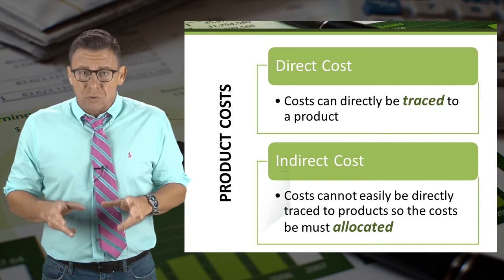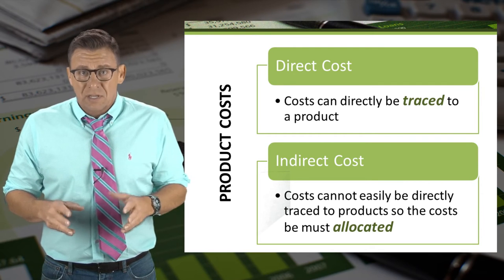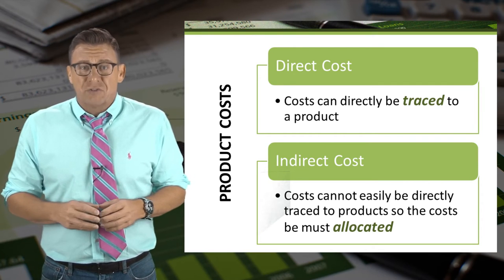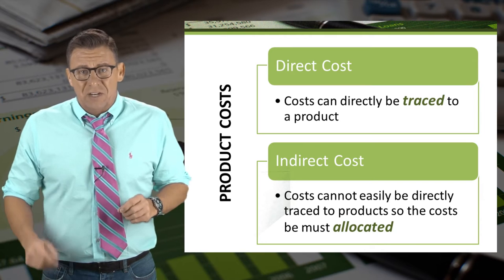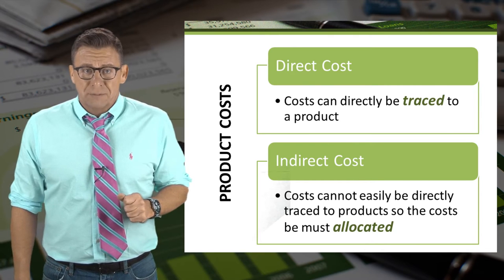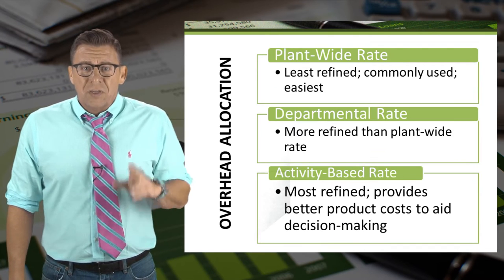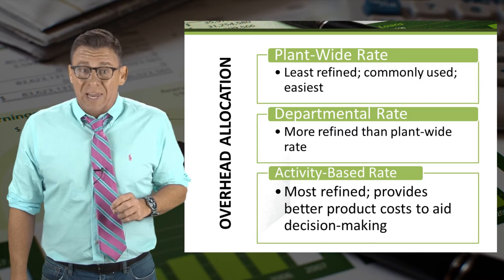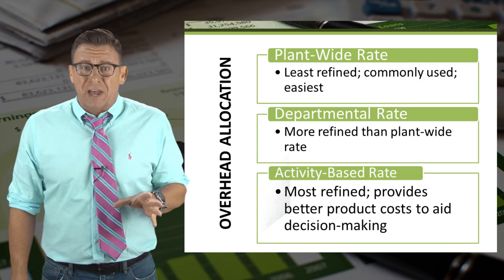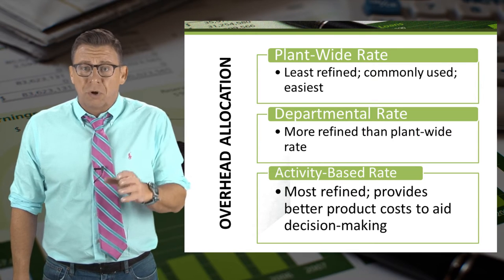Whereas indirect costs, like manufacturing overhead, are allocated to the finished product. There are three common ways to allocate manufacturing overhead to products.